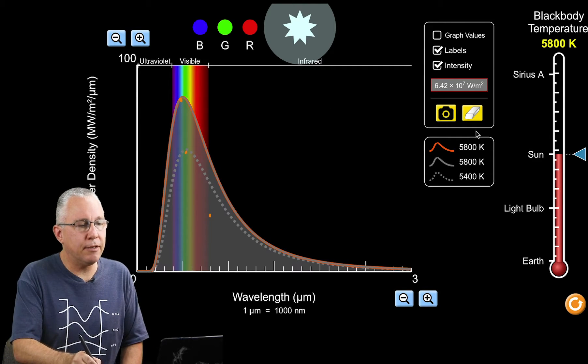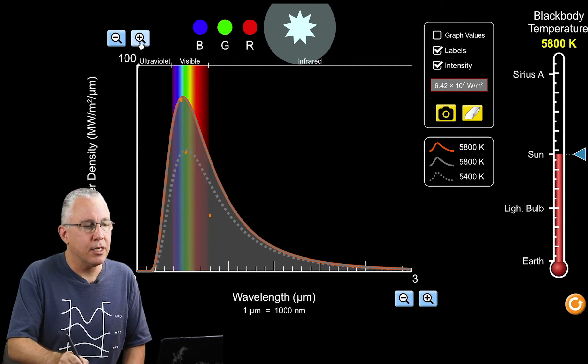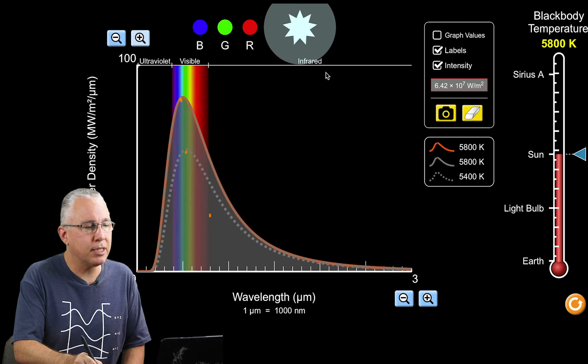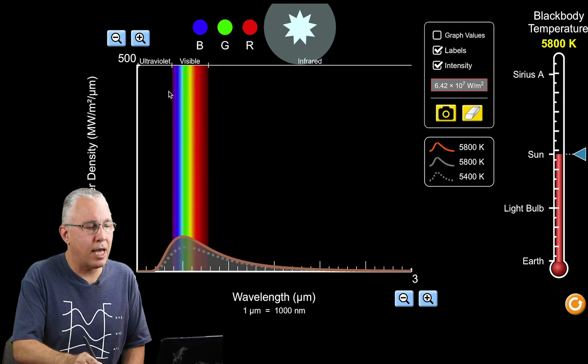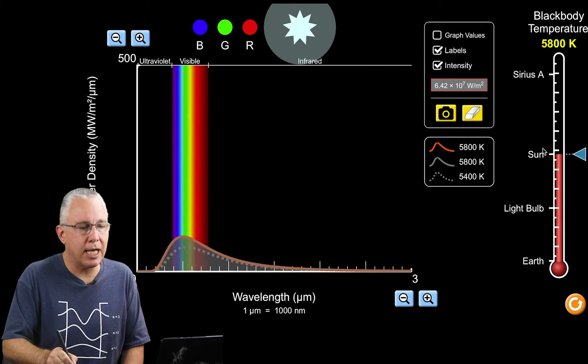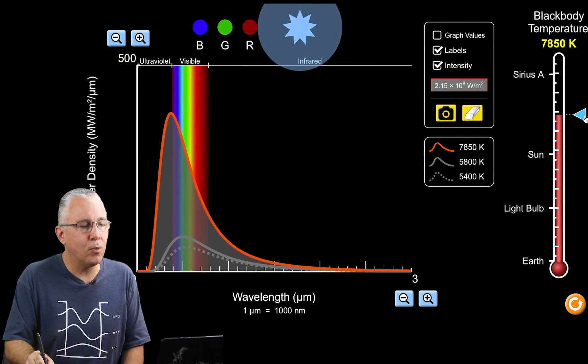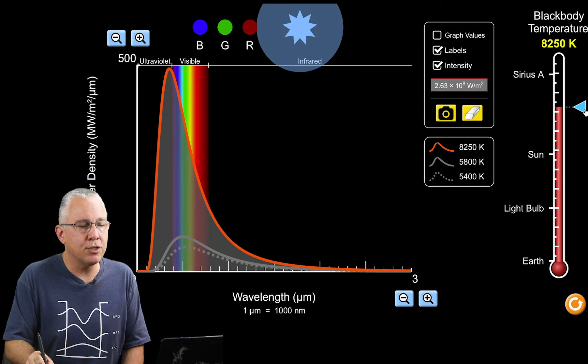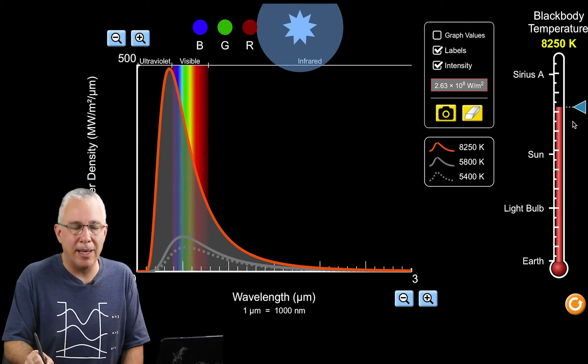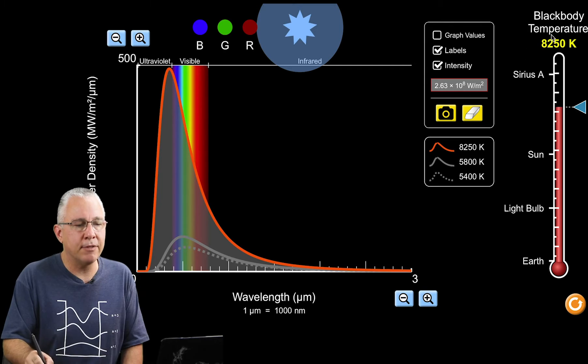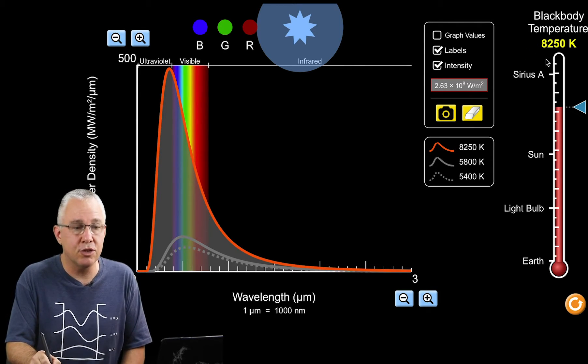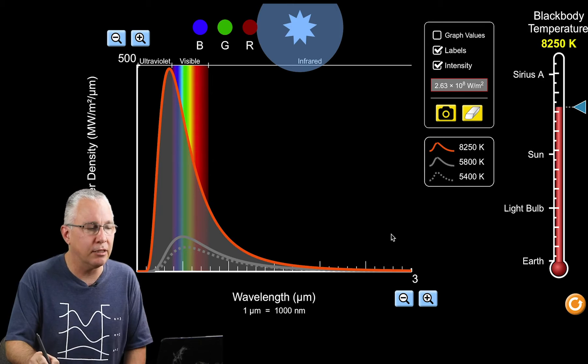What happens if we get a hotter star? I'm going to change my scales and jump up to a star that is significantly hotter. We're going to stop here because we're going off the graph. In this case we have a star with a surface temperature of around 8250 Kelvin.